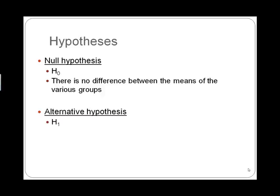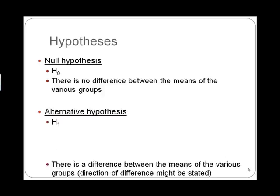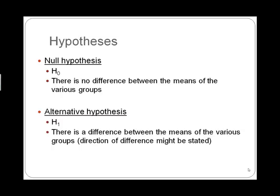We want to find support for our alternative hypothesis. The alternative hypothesis is what we usually hope to find — that there is a difference between the means of the various groups. It is designated with H with a subscript of one. The direction of the difference might be stated within our alternative hypothesis — we might say we expect one mean to be larger than another — but we don't have to. An alternative hypothesis simply states that we expect some difference to exist.